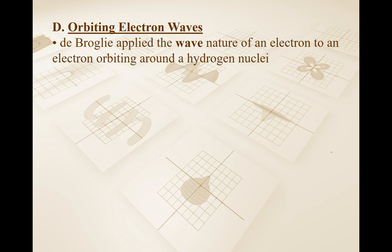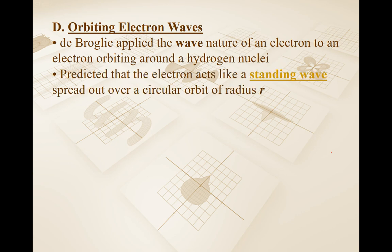What de Broglie did was apply the wave nature of the electron to an electron orbiting around a hydrogen nucleus — we'll stick with hydrogen because it's the simplest atom. He predicted that the electron is going to act like a standing wave spread out over a circular orbit of radius r. Let's deal with this one point at a time. I'll give a quick refresher on what a standing wave is from Physics 20.